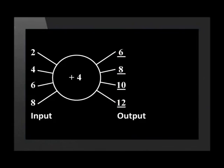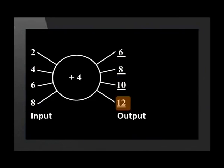A function is a relationship between an input and its output value. Here, the input values are 2, 4, 6, and 8, and their corresponding output values are 6, 8, 10, and 12. We can describe the relationship between the two variables as: the output variable is 4 greater than the input value. So, did we do functions in primary school after all?